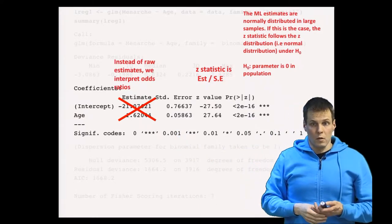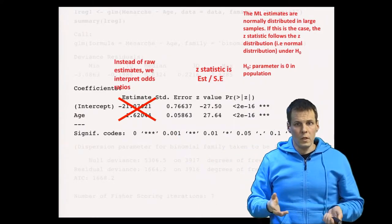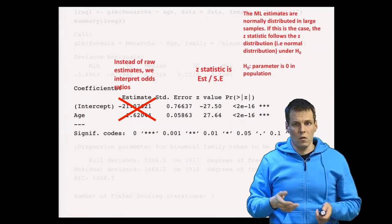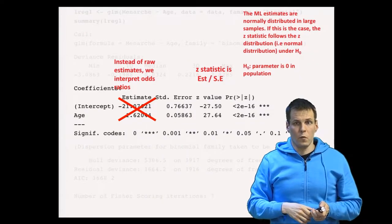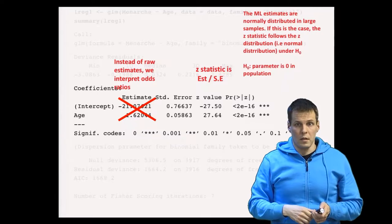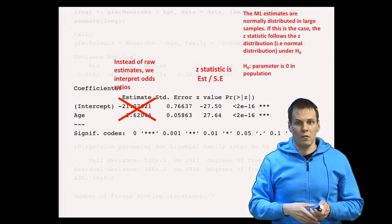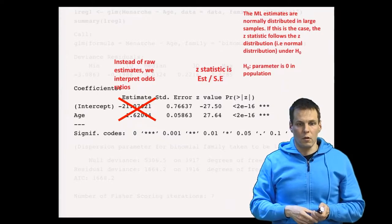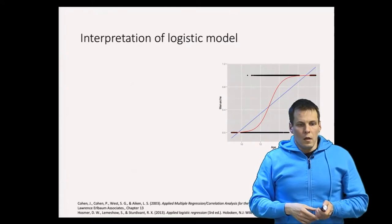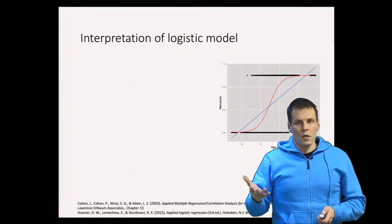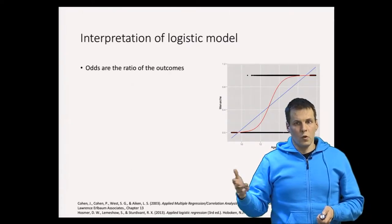Instead, we interpret them as odds ratios. So the odds ratio is a concept that is useful for logistic regression analysis and for some other models as well. The idea is that odds are the ratio of two outcomes.